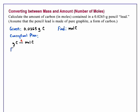So we have one relationship, and that is that one mole of carbon has a mass of 12.01 grams of carbon. This is the molar mass.